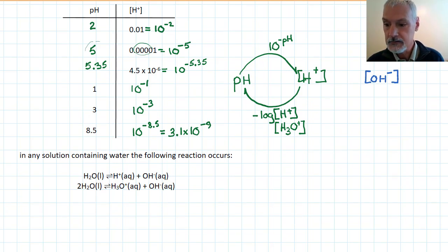In any solution that contains water, we have the following equilibrium taking place. We can view it as simply one water molecule breaking apart into ions, or two water molecules colliding, producing the hydrogen ion, hydronium ion, and the hydroxide ion. For simplicity, I'm just going to consider this reaction right here.